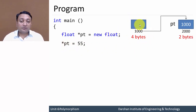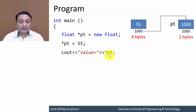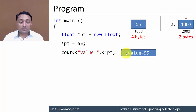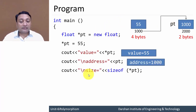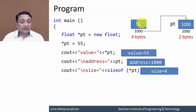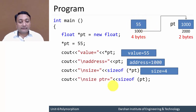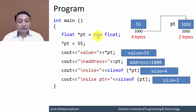New has allocated a memory block of size float, so it will be four bytes. Next, I'm assigning 55 to this pointer variable, so this pointer points to the memory block and 55 is stored there. If I print star pt, it finds the value at address pt — pt holds address 1000, and the value at 1000 is 55, so it displays 55. Printing pt displays address 1000. Size of star pt is 4 bytes, while size of pt is 2 bytes.